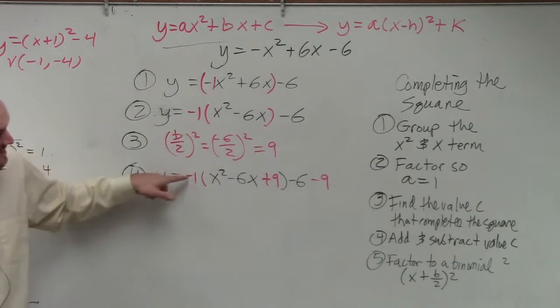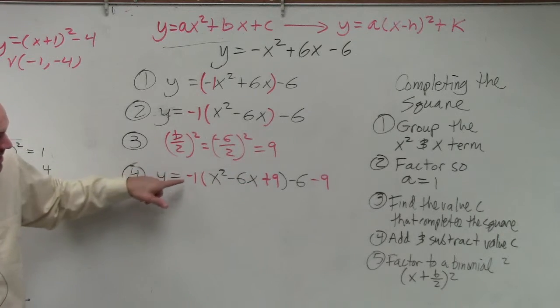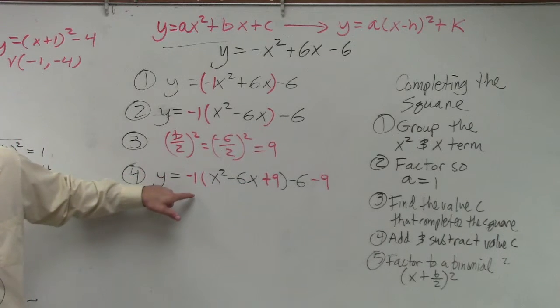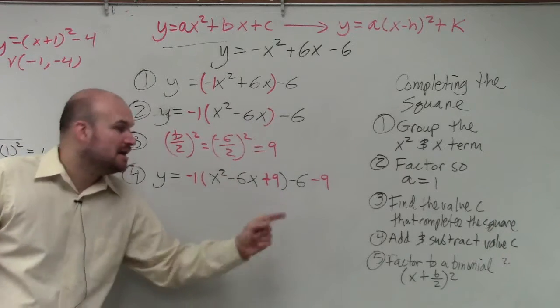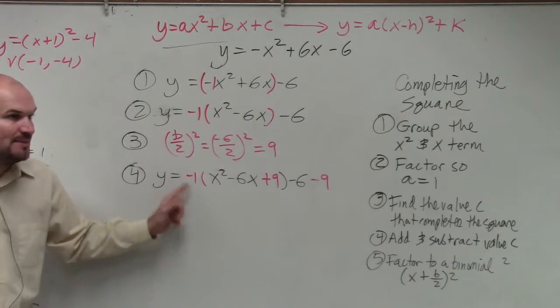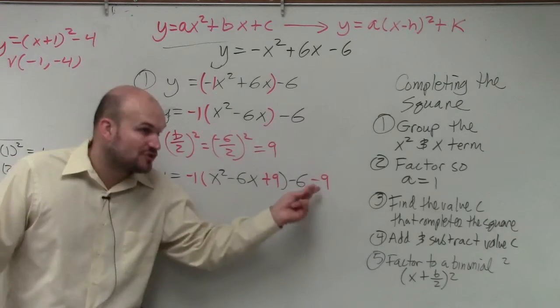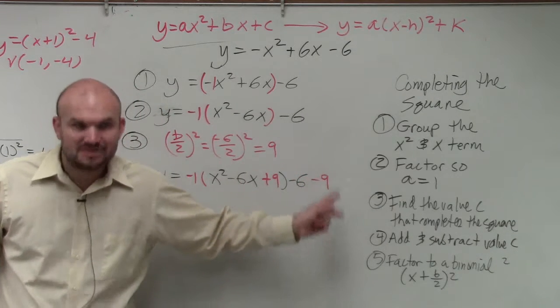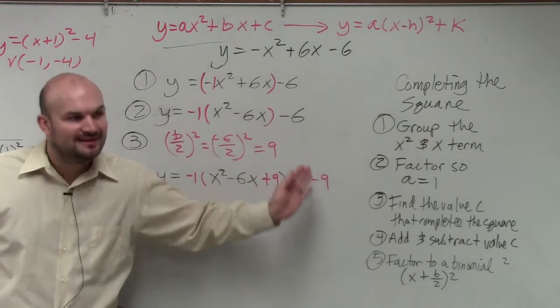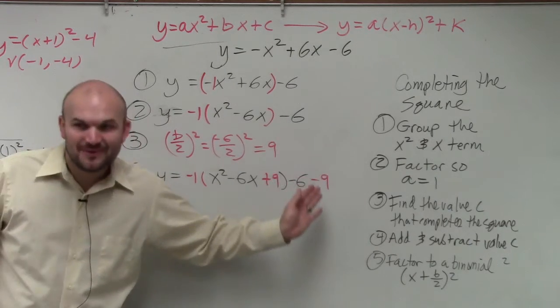And those parentheses are being multiplied by negative 1. So yes, I'm adding a 9. I wrote down add 9. But that add 9 is being multiplied by negative 1. So if I subtract negative 9, I would also have to multiply it by a negative 1.